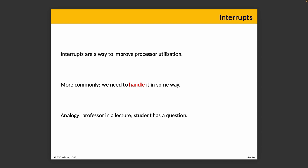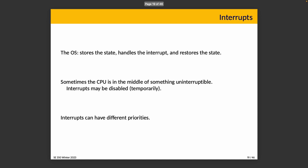The operating system is responsible for those steps: storing the state of the program, handling the interrupt, and restoring the state of the program that was interrupted. The computer is better about this than a human — the CPU tries hard to write down where in execution we are to make sure we can resume. The OS stores the state of whatever was executing when the interrupt took place, handles the interrupt, and restores the state. That's reliable; it's going to work.